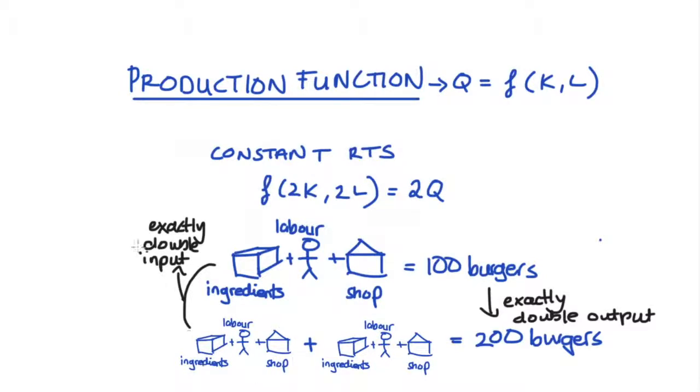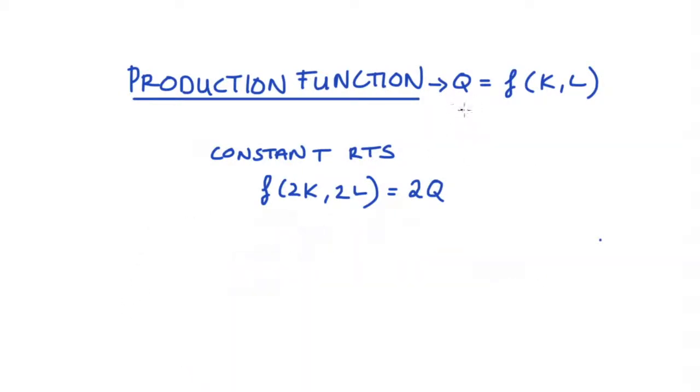So going back to our algebraic production function, where we doubled our capital and labour and we got double the output back, to get to a more general rule that is similar to what is presented in most textbooks and on the web, we just need two steps. Firstly, as we can see here, our Q here is equal to f(K,L). It's a function of capital and labour. So we can replace this Q here with our functional notation, f(K,L).